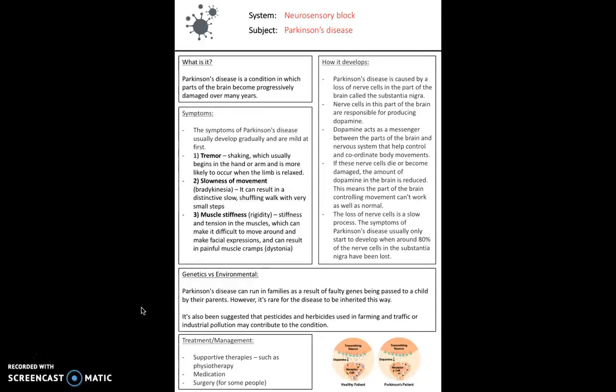With a sufferer of Parkinson's, you'd expect three distinct symptoms. First, a tremor or shaking, which usually begins in the hand or arm. Second, bradykinesia, or slowness of movement, which can result in that slow shuffling walk. Lastly, rigidity of the muscles — stiffness and tension — which can make it difficult to move around and make facial expressions.